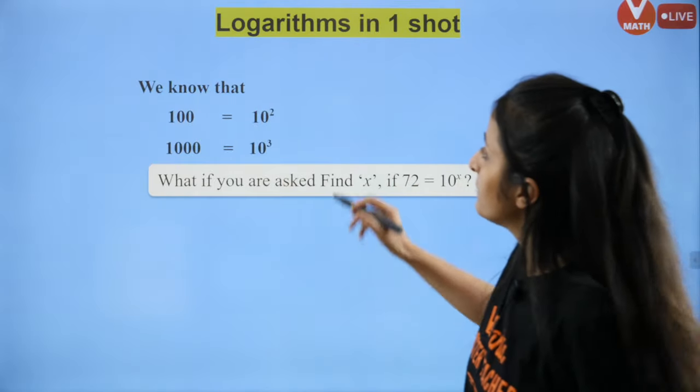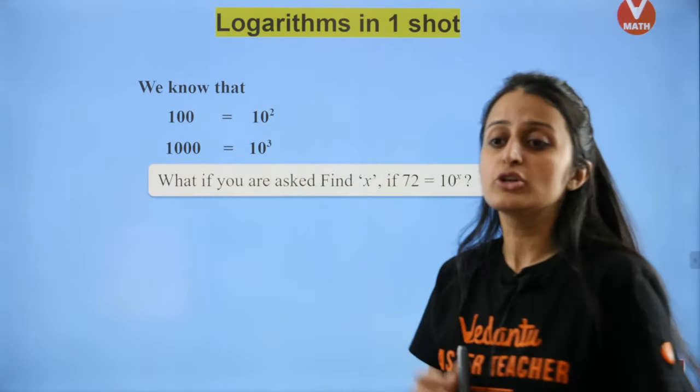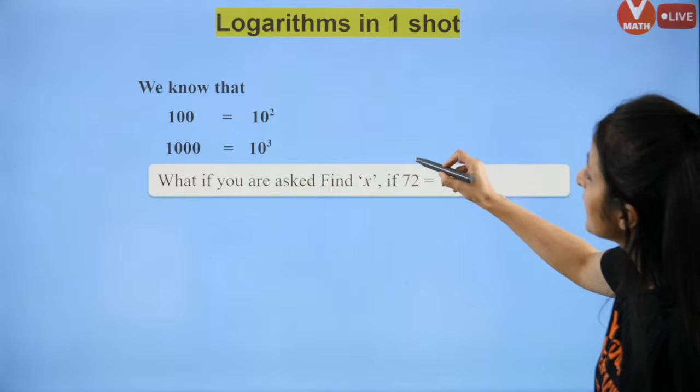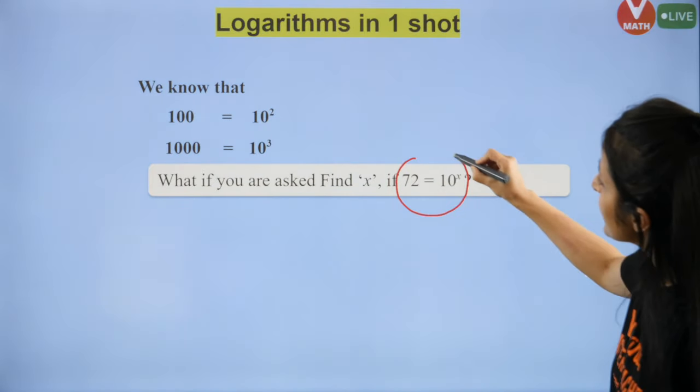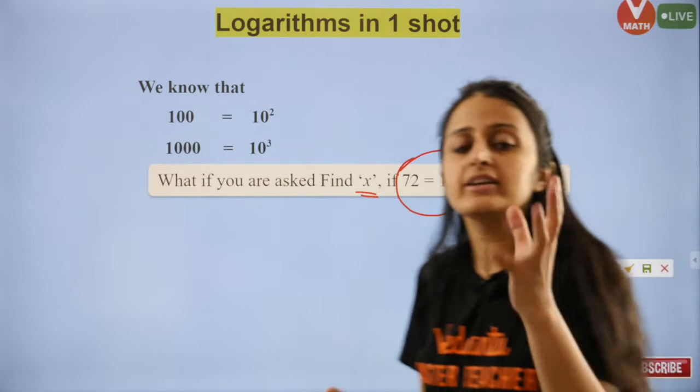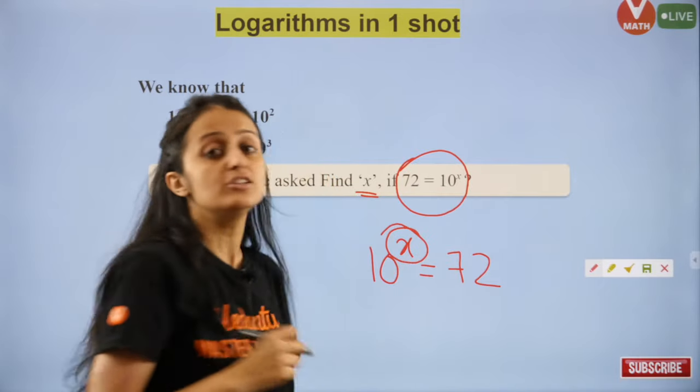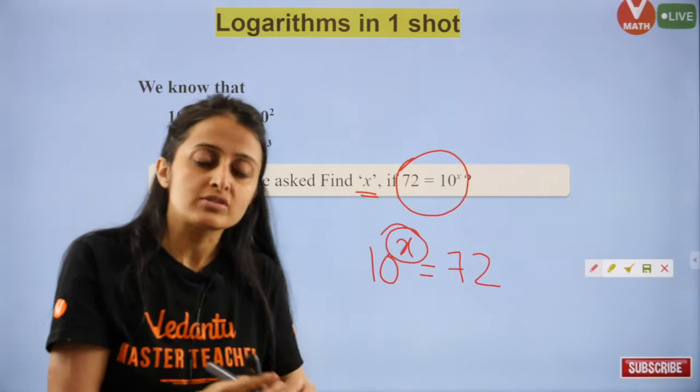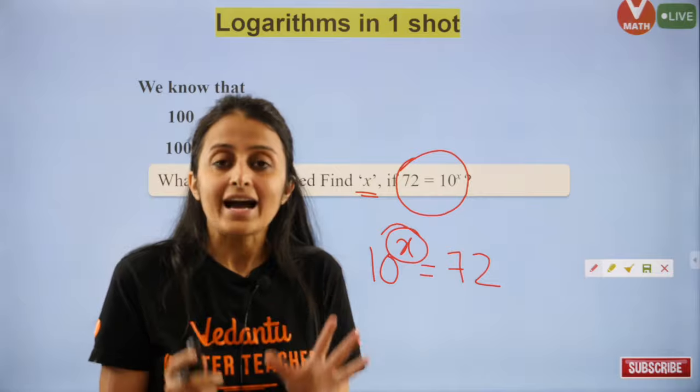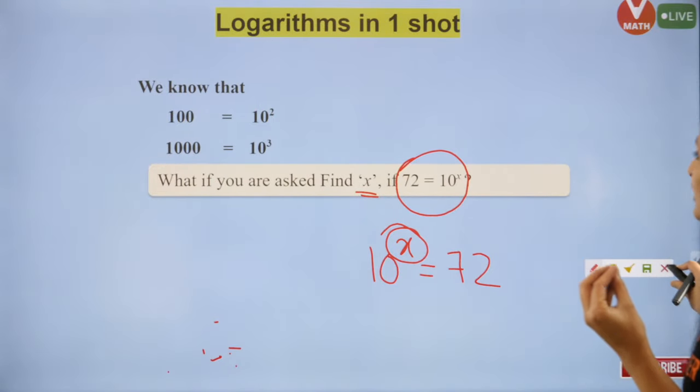Let's get straight into this. We know 100 can be written as 10 square, 1000 as 10 cube. But what if I ask you 72 is equal to 10 raised to power x? Now the situation is such that I don't know what will be x here. How do you think we can find this?